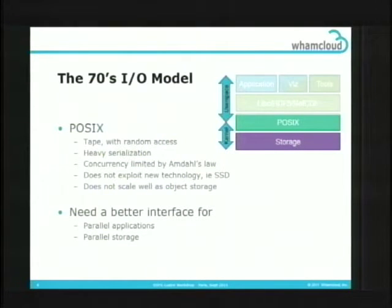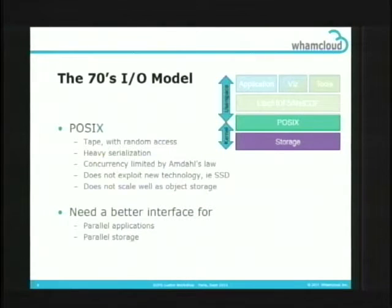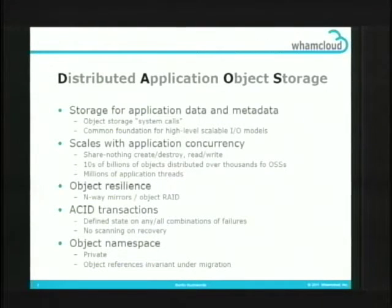We need a better interface between parallel storage and parallel applications. What we're proposing to do with Lustre is create Distributed Application Object Storage, or DAOs. Lustre is object storage underneath, so this creates a system call interface to this distributed object storage. Middleware would use this to manage schemas for individual applications. Within Lustre, you still have a namespace for legacy applications, and DAOs containers would sit in that namespace looking like a bundle — POSIX tools like ls would show just that container and not the billions of objects inside.